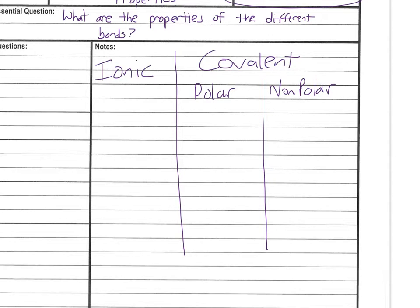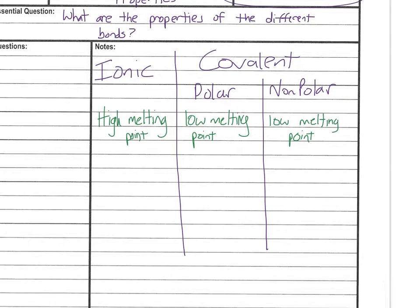The first property that you measured in the lab was the melting point. Ionic compounds have a high melting point — you knew that because they didn't melt despite being on the heat for a good long time. Both polar covalent and nonpolar covalent compounds have a low melting point, since they're both covalent compounds.